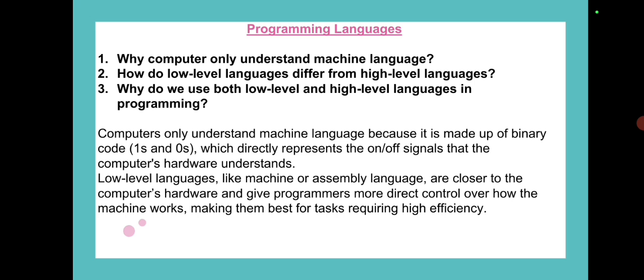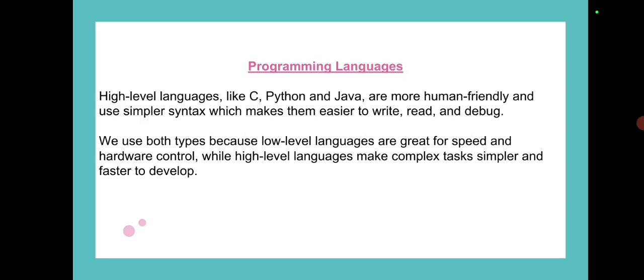Low-level languages like machine or assembly languages are closer to the computer's hardware and give programmers more direct control over how the machine works, making them best for tasks requiring high efficiency. High-level languages like C, Python, and Java are human-friendly and these are near to human. The syntax is simple, English-like syntax that can be followed.